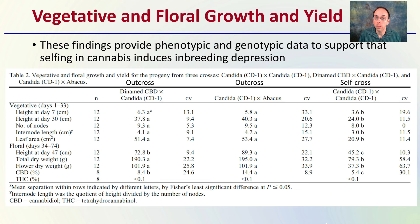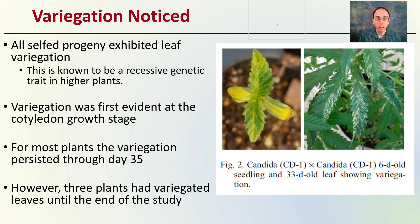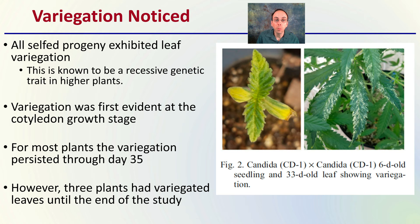Also noticed in this research study is that all self-progeny exhibited leaf variegation, which is known to be a recessive genetic trait in higher plants — again indicating an accumulation of recessive genes. Variegation was first evident at the cotyledon growth stage; cotyledons are the seed leaves. For most plants the variegation persisted through day 35, however three plants had variegated leaves until the end of the study, suggesting it may be a prolonged effect.